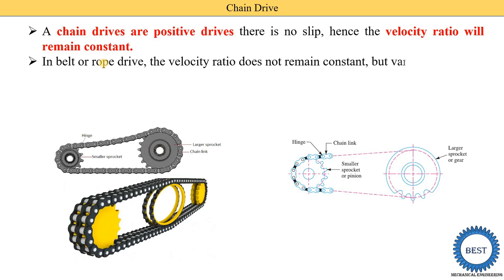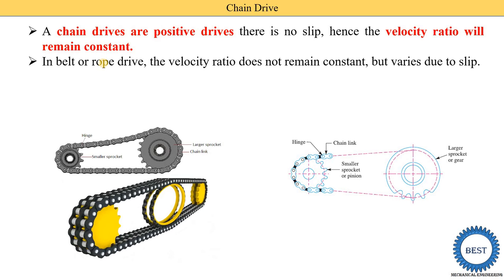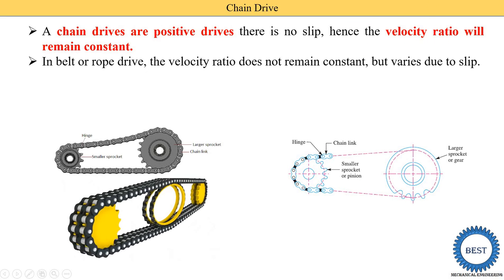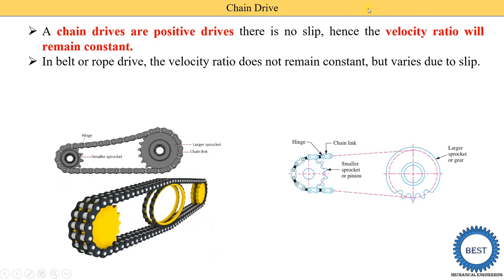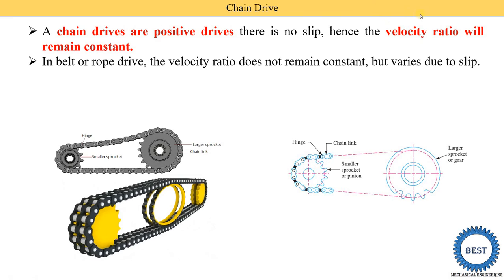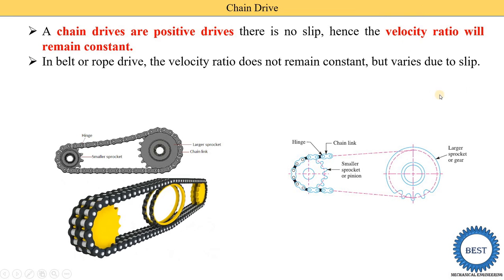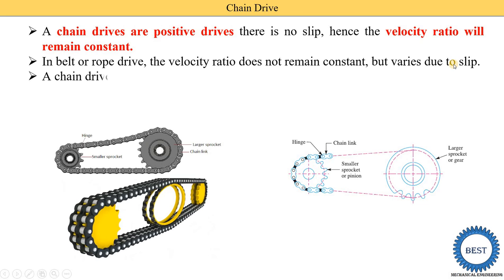In belt or rope drive, the velocity ratio does not remain constant but varies due to slip. If you don't know what is slip, then I already made a video related to slip. I request to check the card from the top right screen of your mobile, you see one eye symbol. From that, you can watch this video on slip. Otherwise, the link is also provided in descriptions.